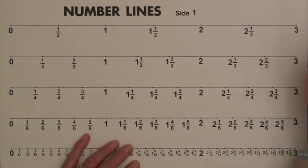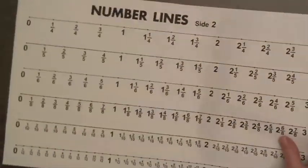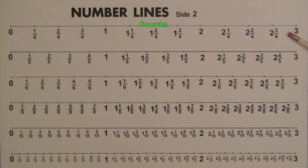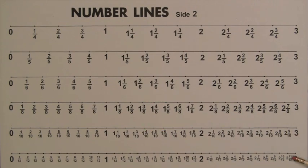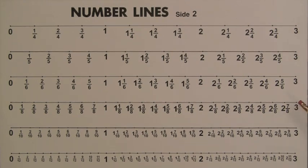The back of this mat has number lines for fourths, fifths, sixths, eighths, tenths, and twelfths. A similar game can be played by moving markers from the points above three to the points above zero.